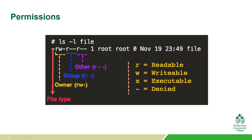When we zoom in closer to just the permissions area, it's very important to understand that we have these three groups — the owner, the group, and everybody else. We have R, W, and then a blank. R is for readable. So for the owner, they have readable privileges and writable privileges — the W. They do not have executable privileges. When it's a hyphen, that is considered denied, meaning they don't have that privilege.